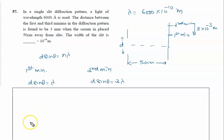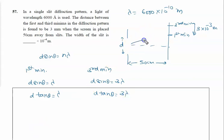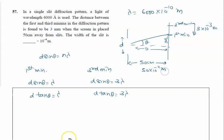When theta is small, sinθ ≈ tanθ. So d·tanθ = λ for the first minima and d·tanθ = 3λ for the third. Now tanθ = y1 / D, where y1 is the position of the first minima and capital D is the screen distance, 50 cm = 50 × 10⁻² meter. So d·(y1/D) = λ, giving y1 = Dλ/d.